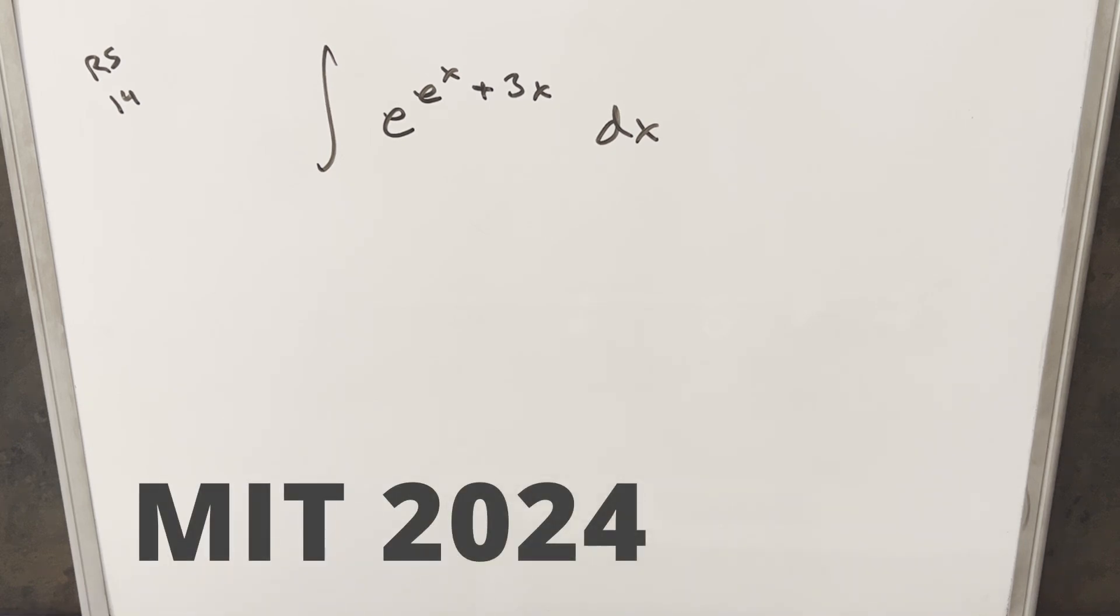Okay, we have another integral from the MIT Integration B 2020 for regular season, 14. We have the integral of e to the e^x plus 3x dx.